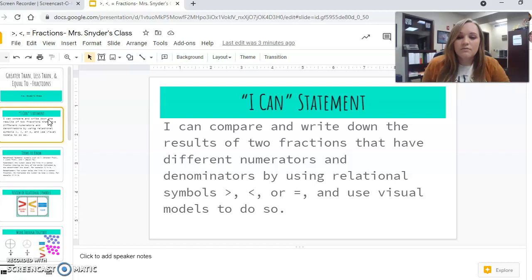So we're going to start off with the I can statement. And it reads, I can compare and write down the results of two fractions that have different numerators and denominators by using relational symbols, greater than, less than, or equal to, and use visual models to do so. So I have put several examples on here, and I'll kind of go through how I want you guys to do that. And then when you're done, you'll just hit submit on your Google Classroom, and it'll come to me.